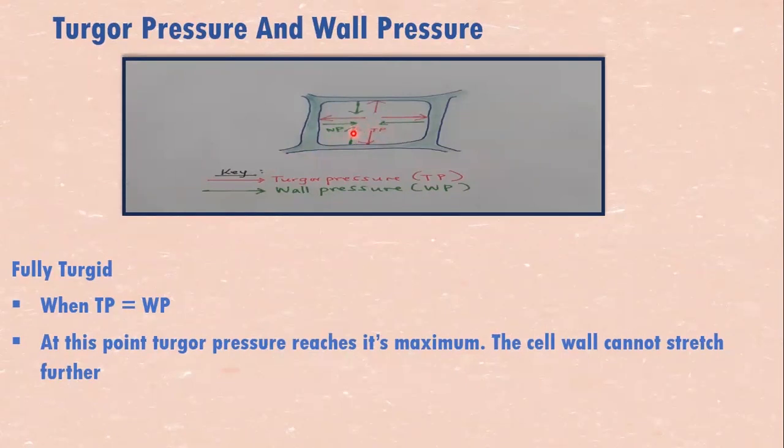The cell is fully turgid, firm, tough, and at that point, turgor pressure is equal to wall pressure.